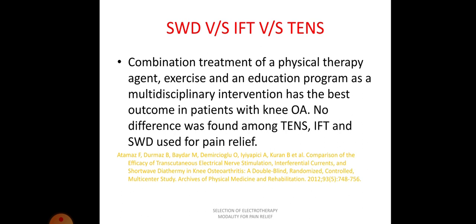Second evidence: when a comparison was made among shortwave diathermy, interferential therapy (IFT), and transcutaneous electrical nerve stimulation (TENS), the result indicated that a combination of physical therapy agents — SWD, IFT, or TENS — along with exercise and an education program as a multidisciplinary intervention produced the best outcome in patients with osteoarthritis of the knee. Statistically, there was no significant difference among TENS, IFT, and shortwave diathermy; all three were equally effective for pain relief.